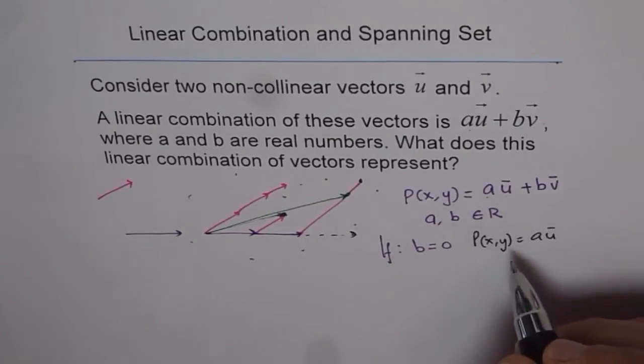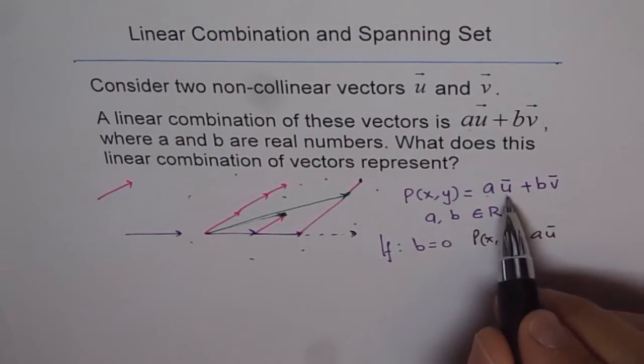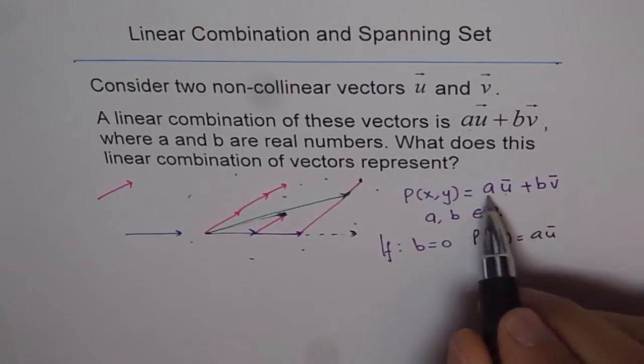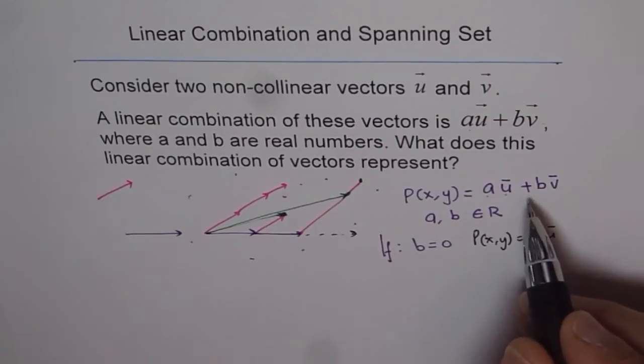But the important thing here is that u and v should be non-zero, non-collinear vectors. If they are 0, then anything multiplied by 0 will be 0, so you can only map 0, 0 with it, not any other point.